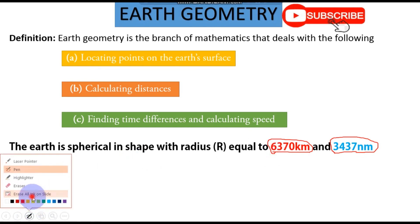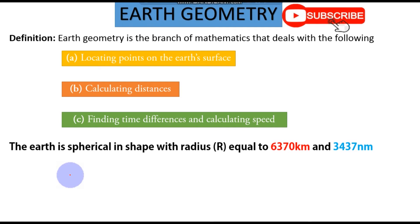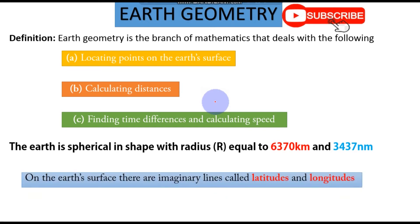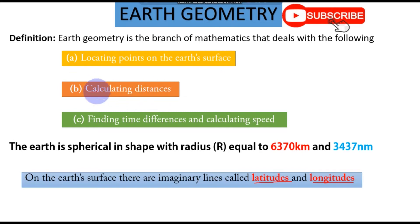We also have imaginary lines on the earth's surface. Those imaginary lines are latitudes and longitudes. These two imaginary lines are the ones that will help us to allocate points on the earth's surface, and they are very important when calculating distance and when finding the time difference between two positions.